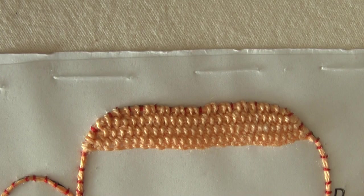Make sure you have sufficient thread to get across the row. A good guide is three to four times the length of thread to space, i.e., one inch of space equals three to four inches of thread. It is not good practice to join a thread in the middle of a row.